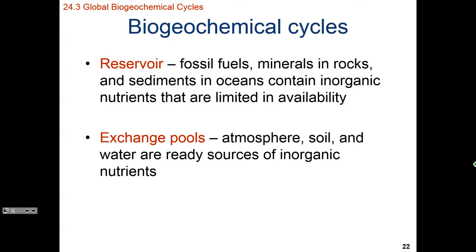If we look at fossil fuels, those could be a reservoir for carbon. We can have rocks and sediments as a reservoir for sulfur or phosphorus, and if we look at our atmosphere, it's a reservoir for nitrogen. Then we're going to have exchange pools, which have rapid cycling of nutrients. Depending on the nutrient, those exchange pools are going to be either water, the atmosphere, or surface soil.